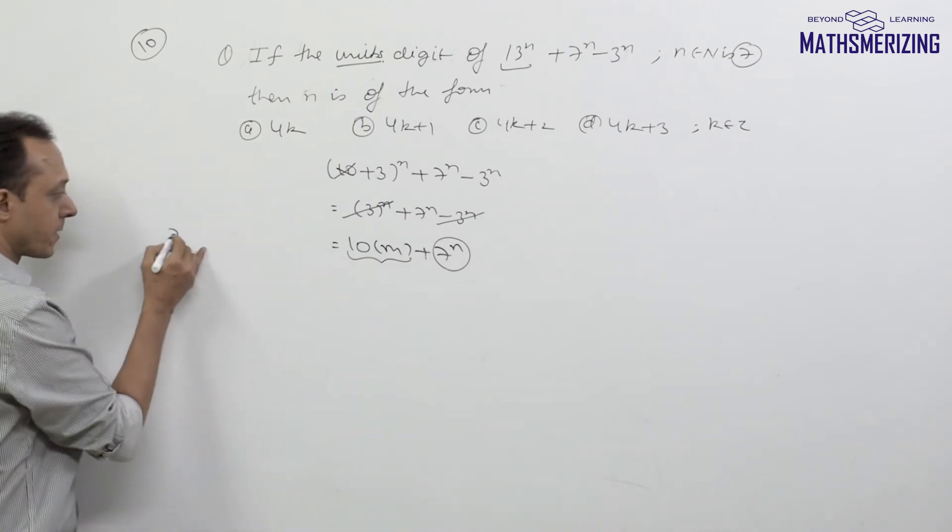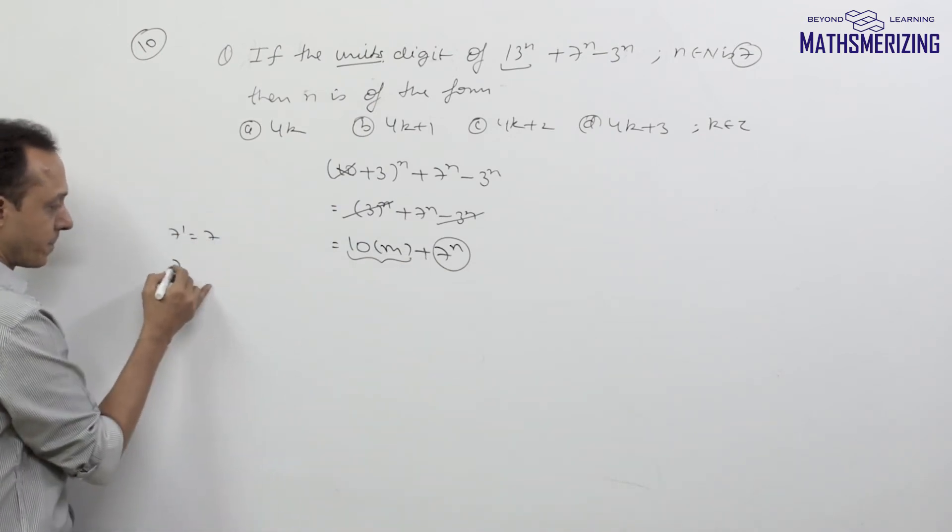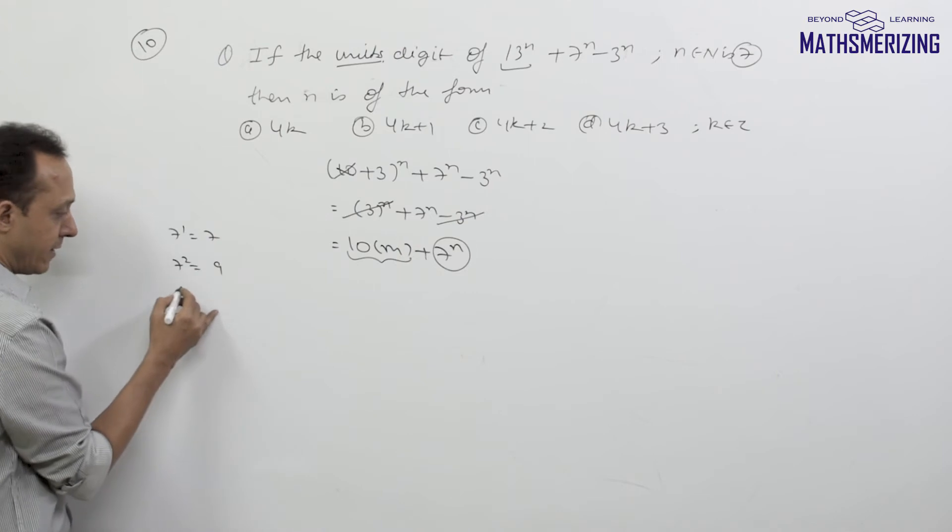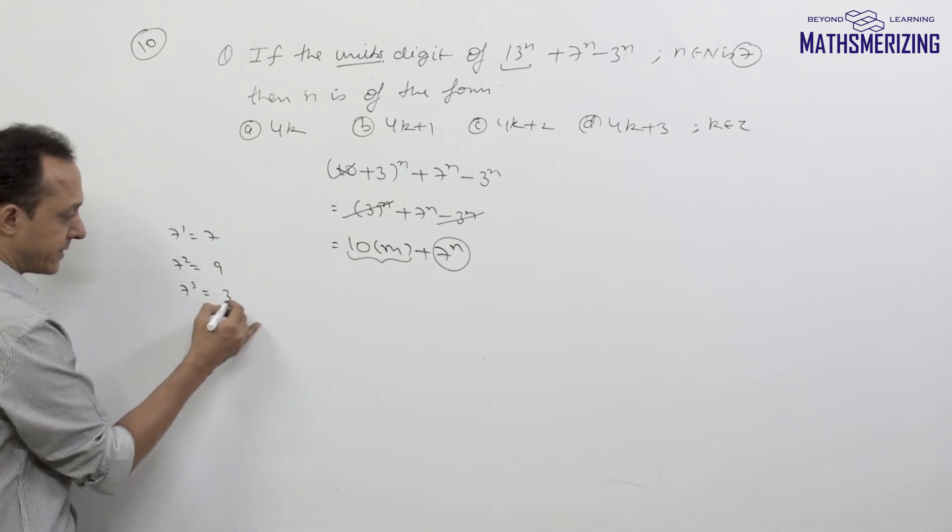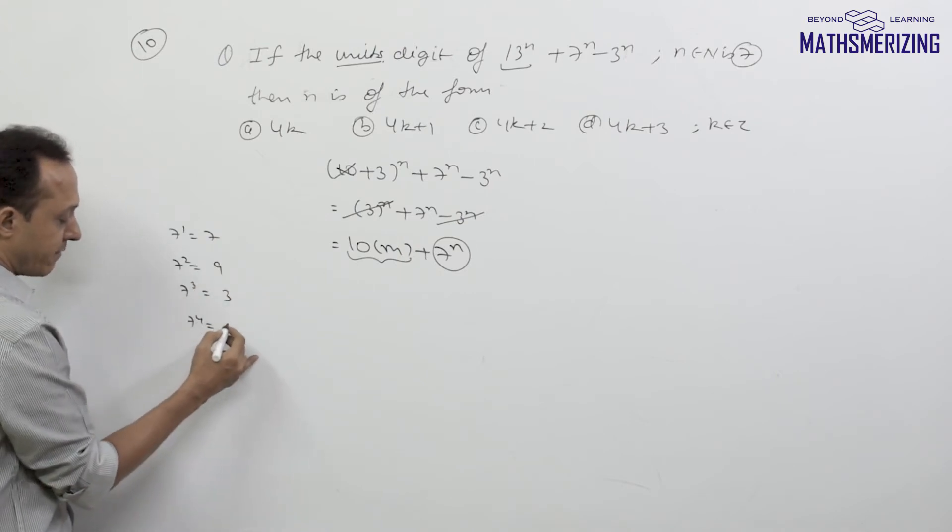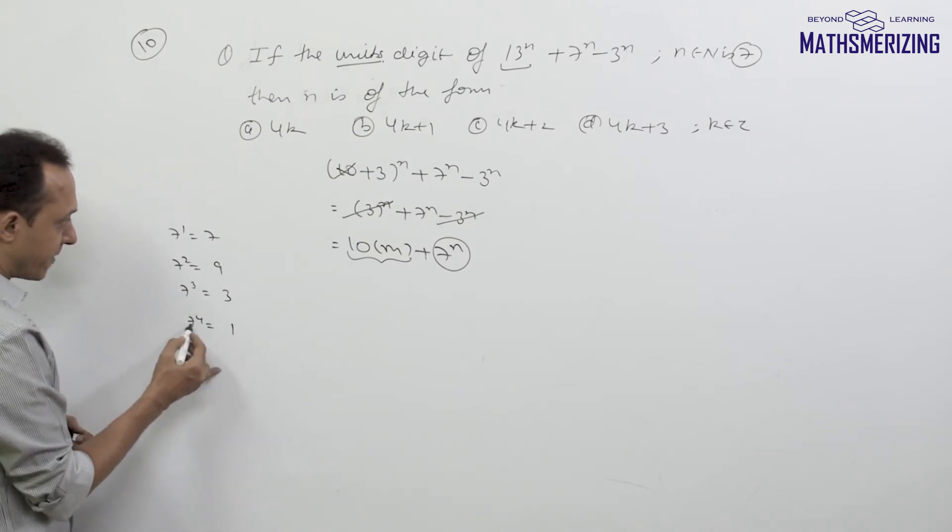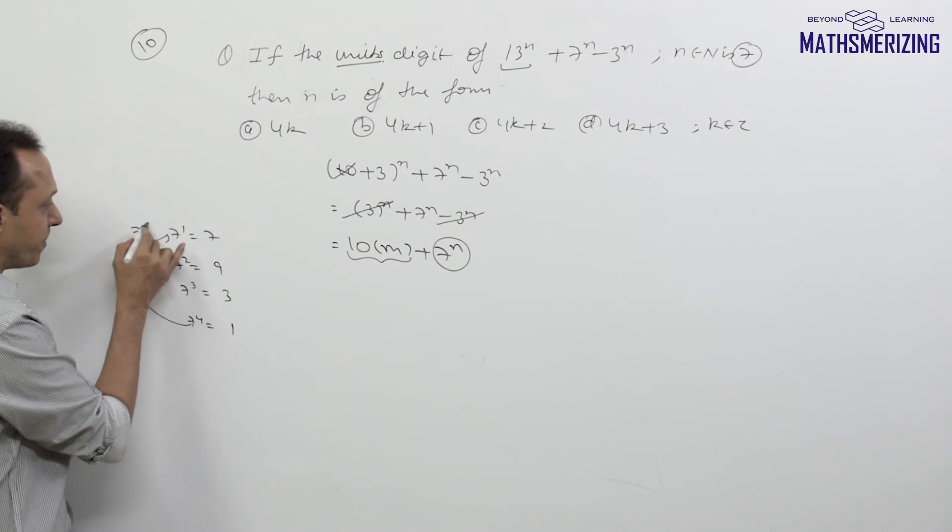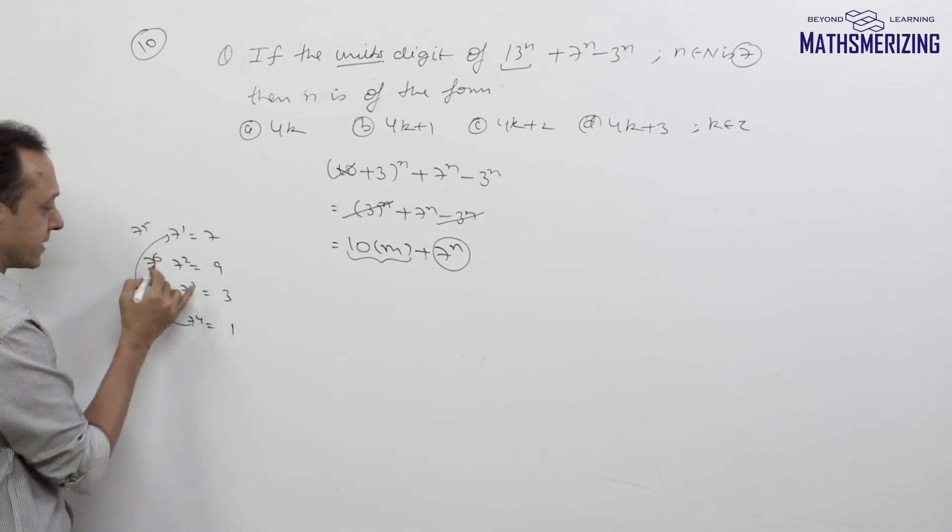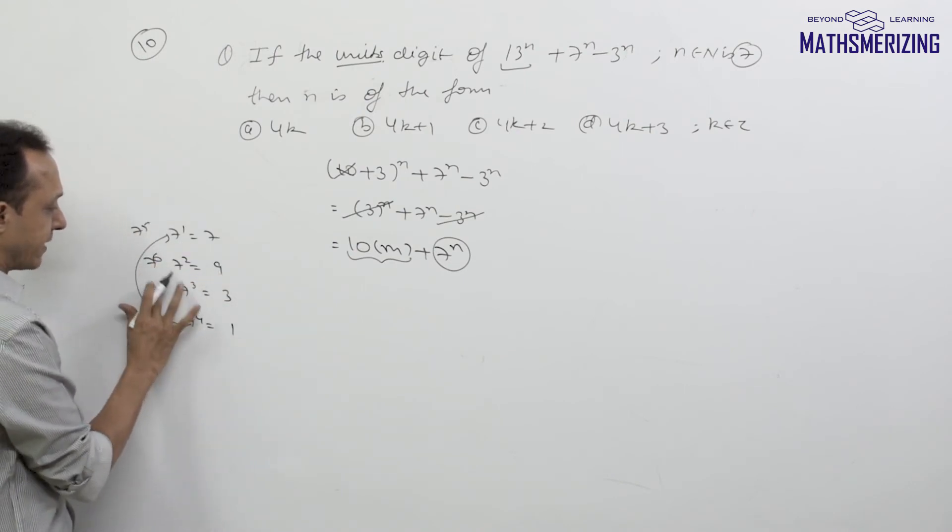What I know is 7^1 is 7, 7^2 is 49, 7^3 is 63, 7^4 is 1, and then again after 4 it will be 7^5 which is 7, 7^6 is 9, 7^7 is 3.